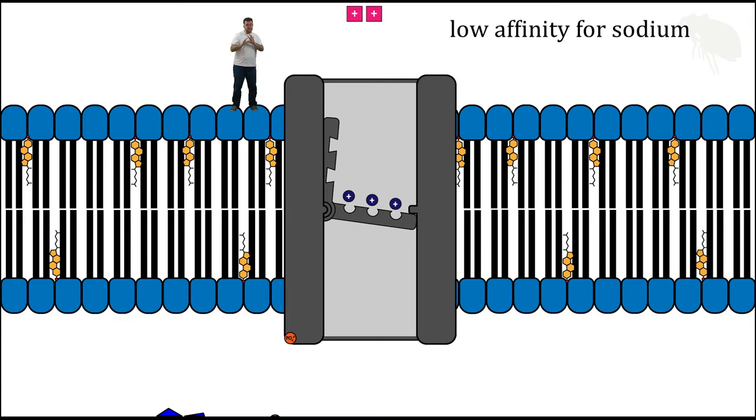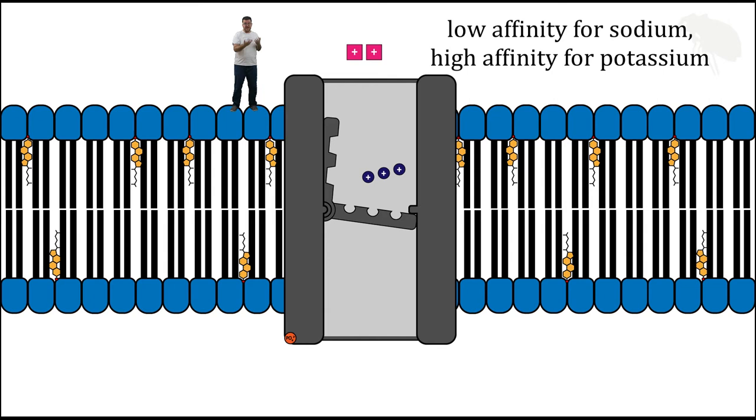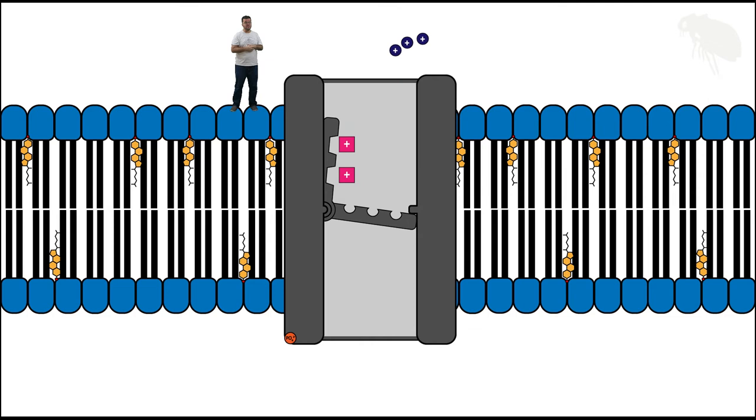And the release of sodium induces yet another conformational change in which the potassium binding sites become available and have a high affinity for potassium. And you know because of that high affinity, here comes some potassium to bind with those sites.